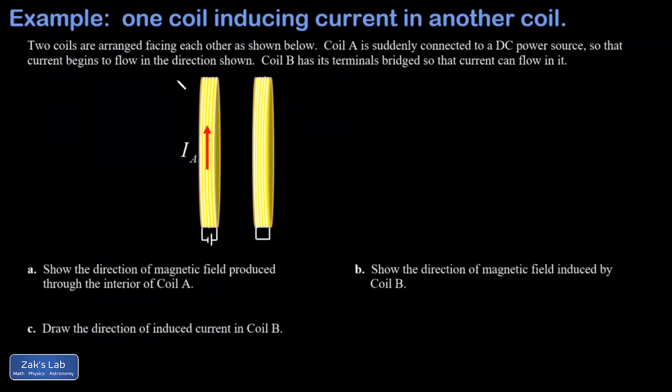In this video we're presented with two coils arranged face to face, and coil A is suddenly connected to a power source and current begins to flow in it. That current is going up the face that's nearest to us. So in part A we're asked what's the direction of magnetic field produced through the interior of coil A.